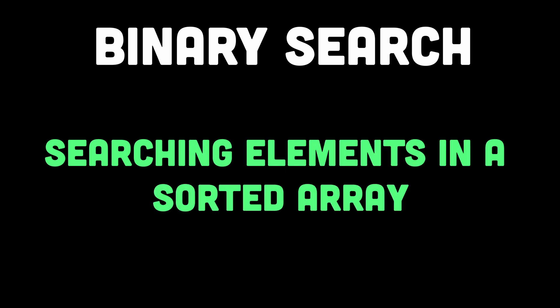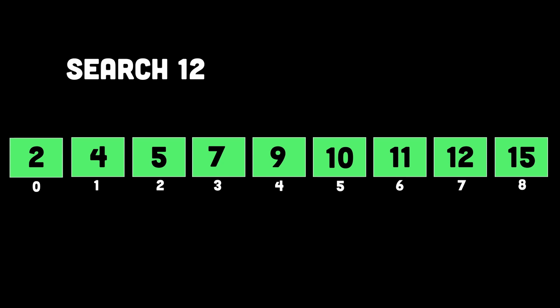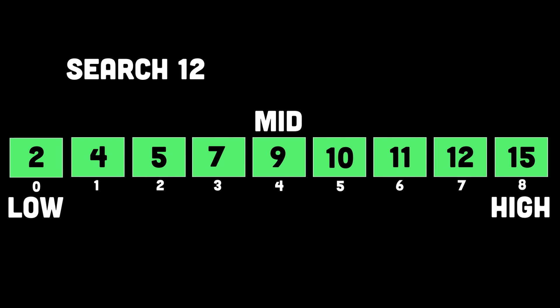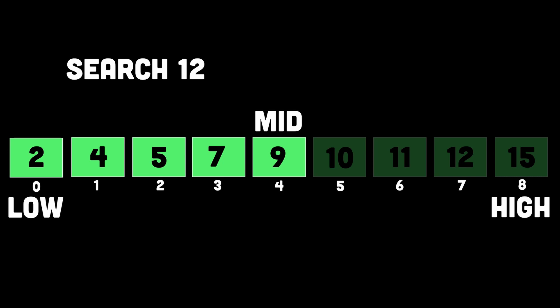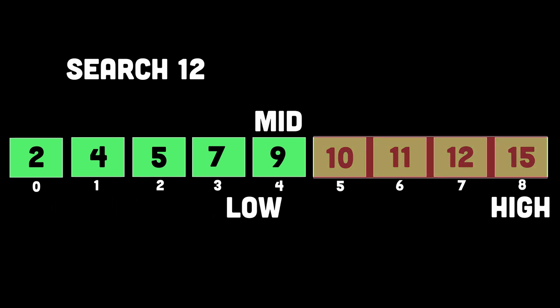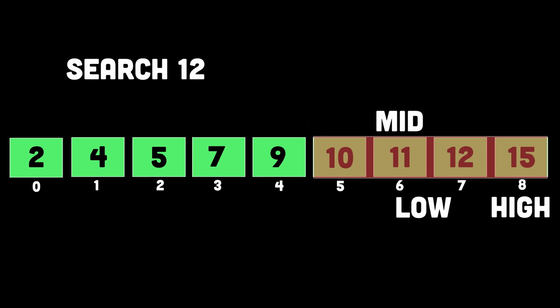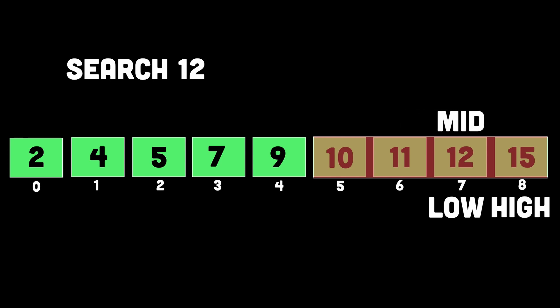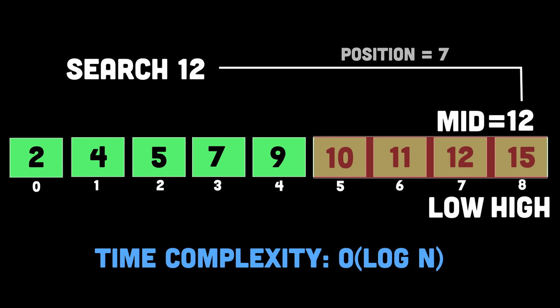The third pattern is binary search, which is used to efficiently search for a specific element in a sorted array or list. The binary search approach divides the list in half and compares the middle element with the target element. If the middle element is the target, the search is successful. If the middle element is greater than the target, you eliminate the right half; if smaller, you eliminate the left half. This approach is particularly useful for large sorted lists, offering a time complexity of O(log N), making it significantly faster than linear search algorithms which have a time complexity of O(N).